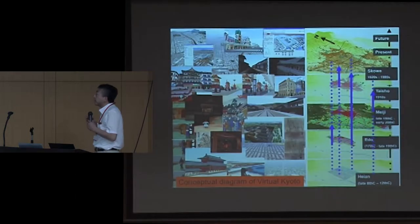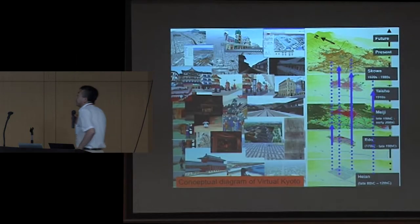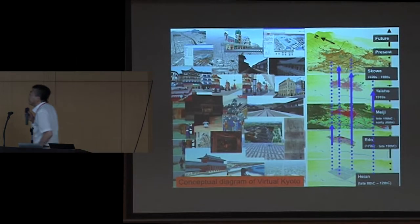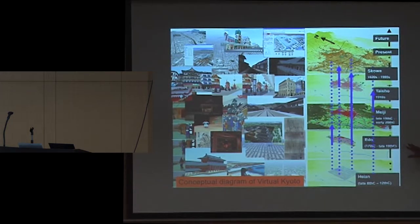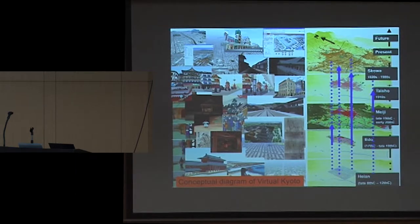This is a conceptual diagram of Virtual Kyoto. Basically, you can see the time-space like this. We have many, many time slices across the long history.